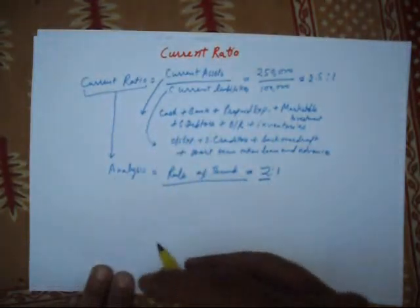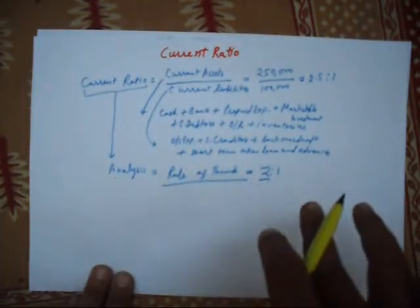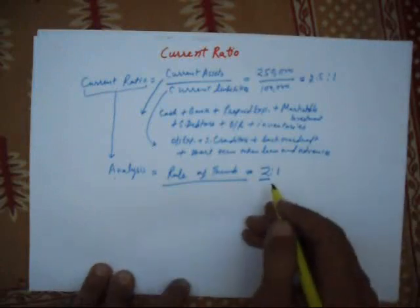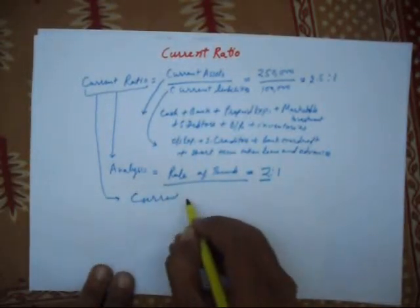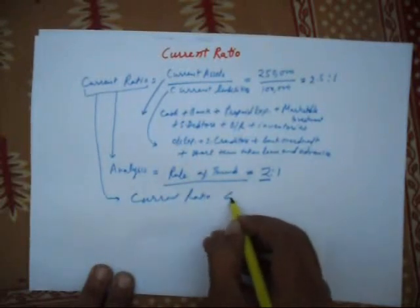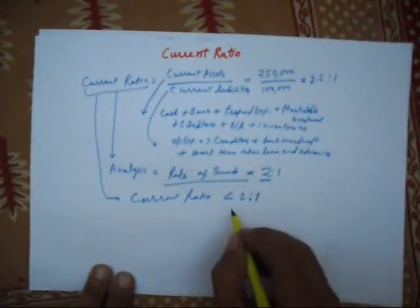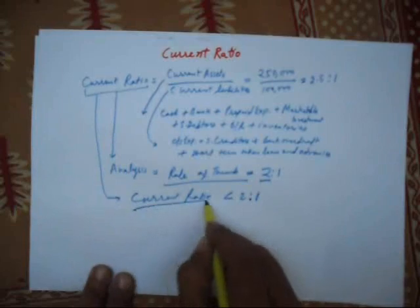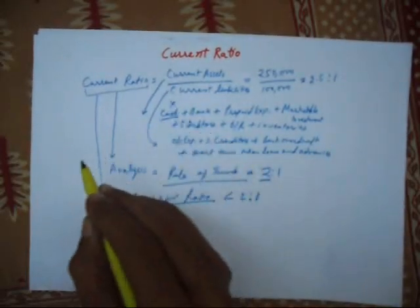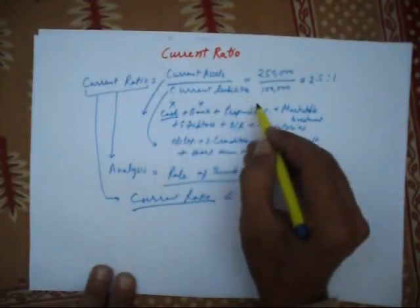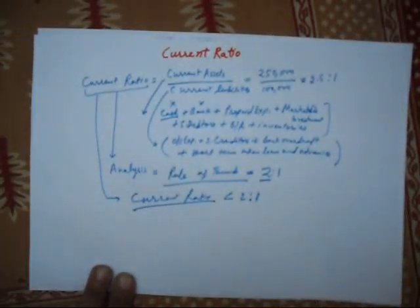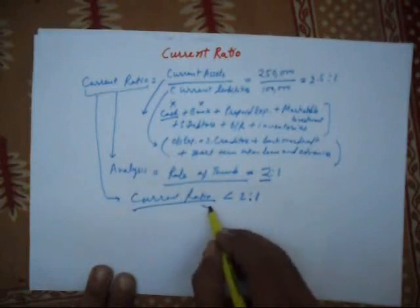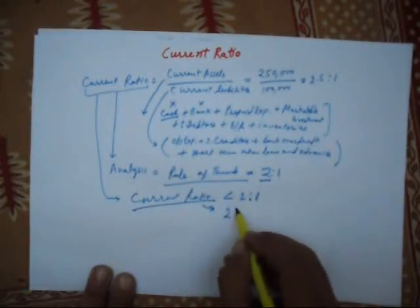Current ratio should not be very high, nor very low. Because if current ratio is less than two to one, then it means that we have no cash, no bank, no other current assets to pay our current liabilities. This will not show a good short term position. So our current ratio must be two to one.